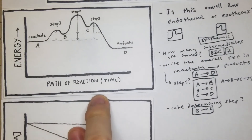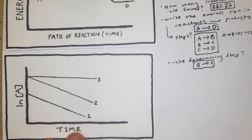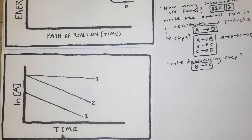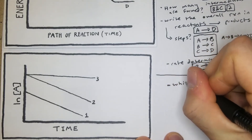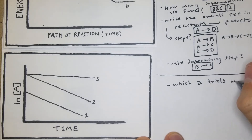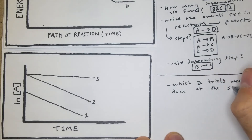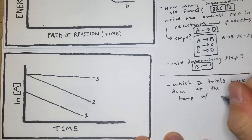There's one other type of problem that can throw people off. In this graph, the y-axis shows the natural log of concentration — ln[A] — and the x-axis is time, with three different trials plotted. One question type asks: which two trials were done at the same temperature but with different concentrations?